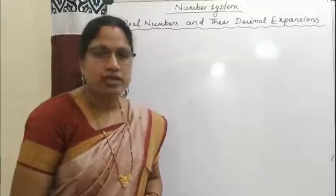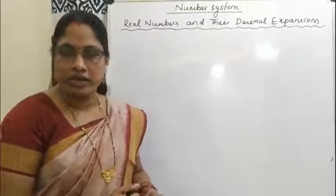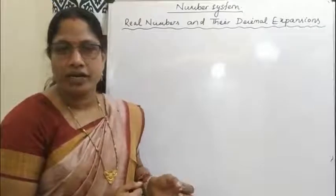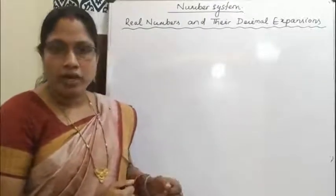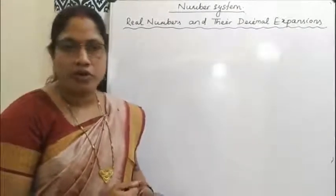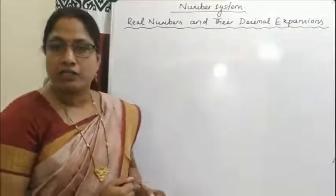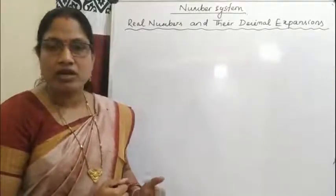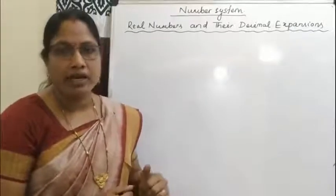Dear students, in our last class we discussed the difference between rational numbers and irrational numbers, and how to represent irrational numbers on a number line. Here in this section, we are going to study rational numbers and irrational numbers from a different point of view. We have to find the decimal expansion of real numbers.